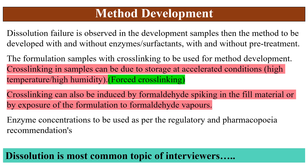Coming to method development for media containing gelatin and enzymes for products with gelatin capsules or gelatin protein: if dissolution failure is observed in development or stability samples, a method should be developed with and without enzymes or surfactant, with and without pre-treatment. This method should include justification for why enzymes are being used. Crosslinked formulation samples should be used for method development. Crosslinking in samples can be induced by storage at accelerated conditions — high temperature and high humidity — as forced crosslinking. Stability samples showing crosslinking can also be used for method development.